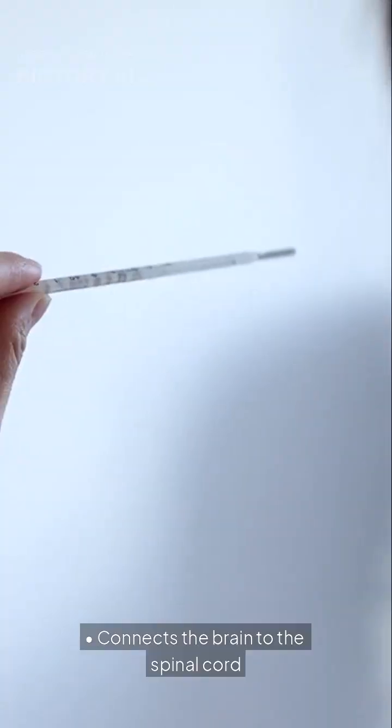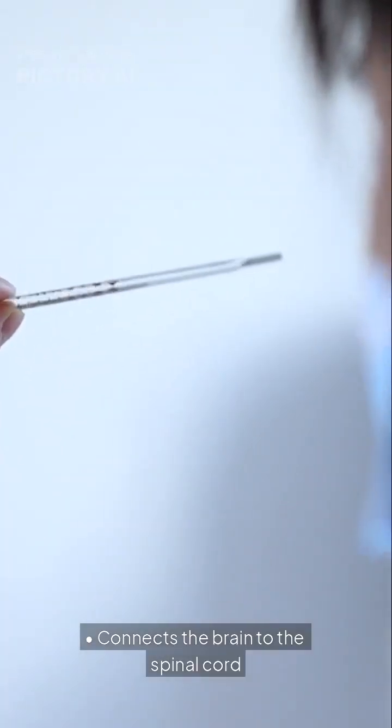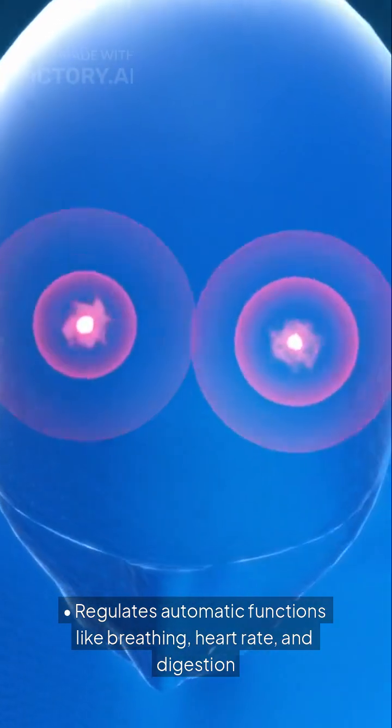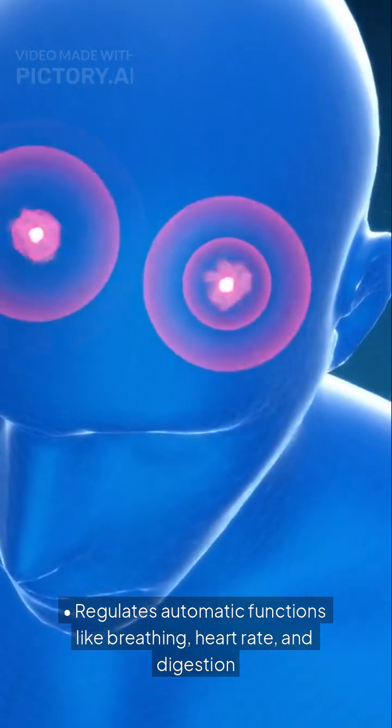The brainstem connects the brain to the spinal cord. It regulates automatic functions like breathing, heart rate, and digestion.